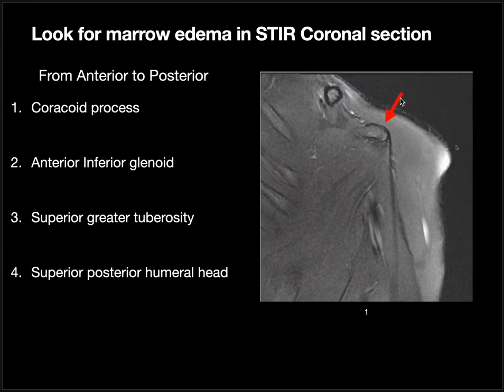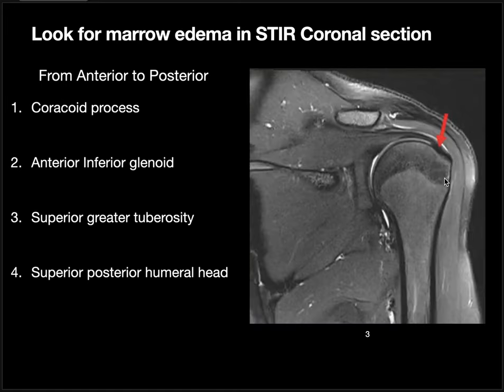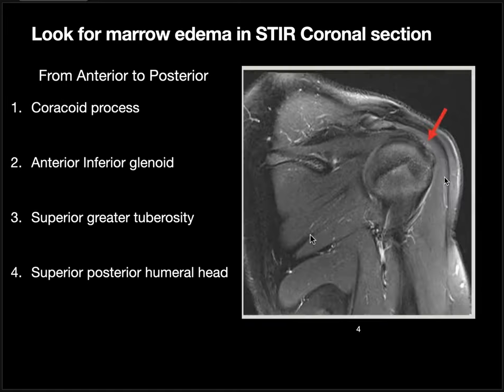Next, when looking for bones, we should also look for marrow edema. For that, we use coronal sections, and going from anterior to posterior, there are four potential sites for marrow edema: first, the coracoid process; second, the anterior inferior glenoid process; third, the superior greater tuberosity; and fourth, the superior posterior humeral head.